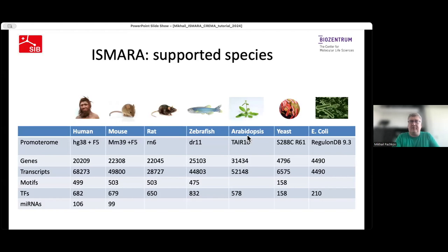First, I'd like to start with a table showing what organisms are currently supported by ISMAR. In this table, you can see statistics on how many motifs, how many transcription factors, and what genome versions are supported. Note that we show here the latest genomes supported by ISMAR. For human and mouse, there is also support for MM9 and MM10 versions of the mouse genome, and for human we also support hg18 and hg19.